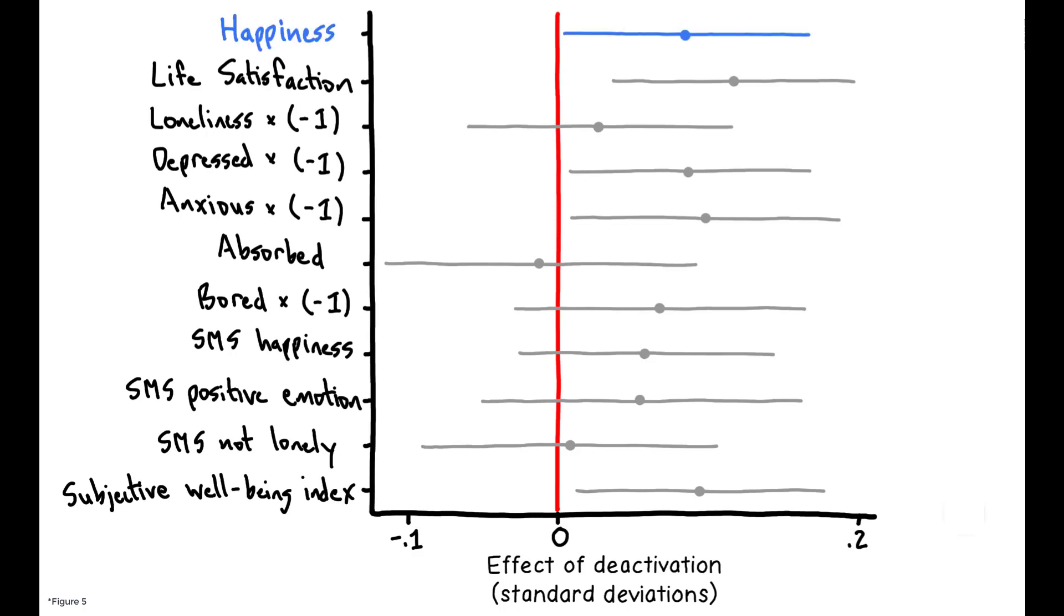particularly in terms of self-reported happiness, life satisfaction, and less depression and anxiety. The overall index improves by 0.09 standard deviations, which is roughly 25-40% of the effect of psychological interventions such as therapy or group training, as measured in other research.